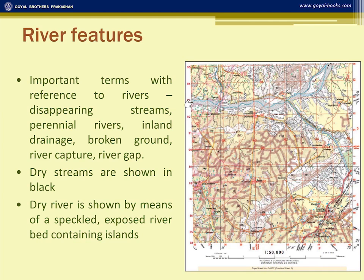You can see these white patches — these are known as islands. Then, you can see some of the streams here that are not meeting the main river. A question may be asked: in grid reference 9478, the stream is not meeting the main river — why? This is because there could be a limestone region or a desert region where evaporation is very high, or the water seeps in before the river meets the main river. Hence, it is called a disappearing stream because it disappears before meeting the main river.